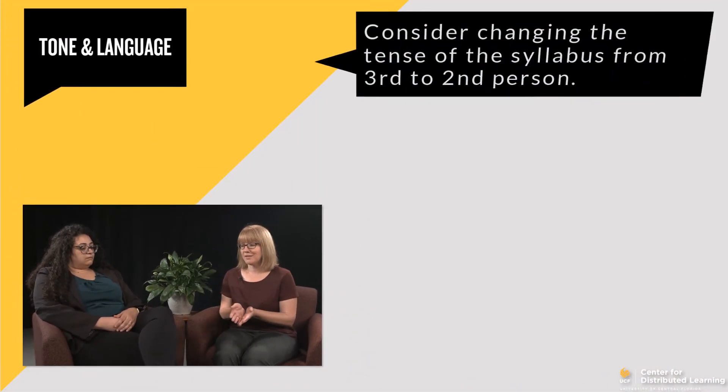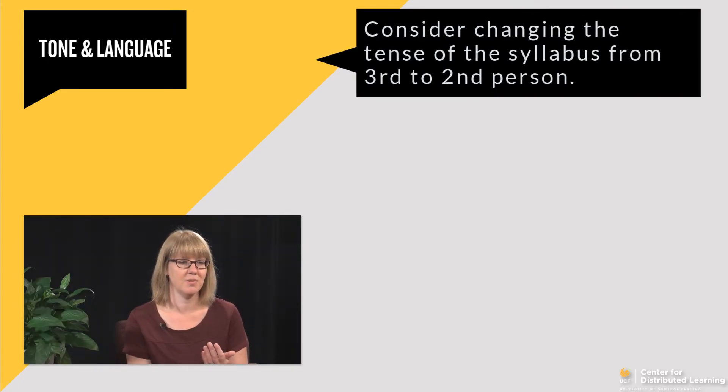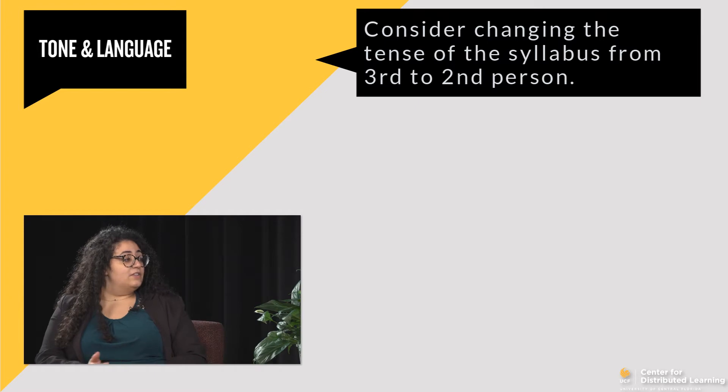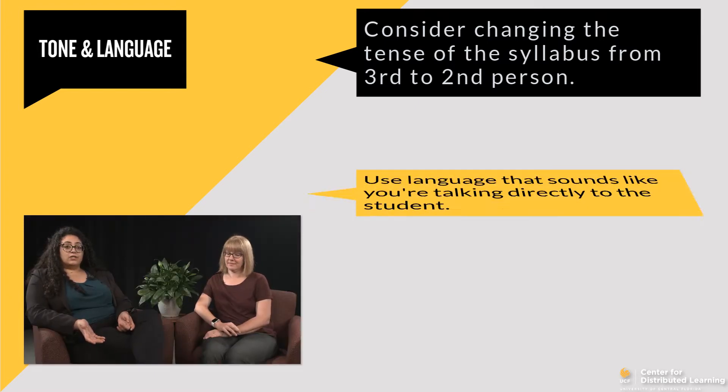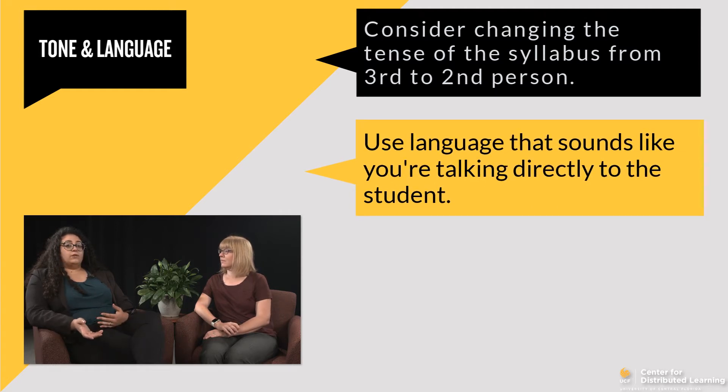Let's talk about the tone and language of the syllabus. Even though the syllabus is a contract of sorts, it doesn't have to read like one. I've seen a lot of syllabi with jargon that I didn't really understand as a student. Sometimes you write a syllabus for departmental approval or accreditation purposes — you can keep a version like that — but consider another version written in a more conversational tone. Something as simple as changing from third person to second person can create a connection. Instead of saying 'the student should contact the professor,' just say 'if you have trouble with the course, please contact me.'